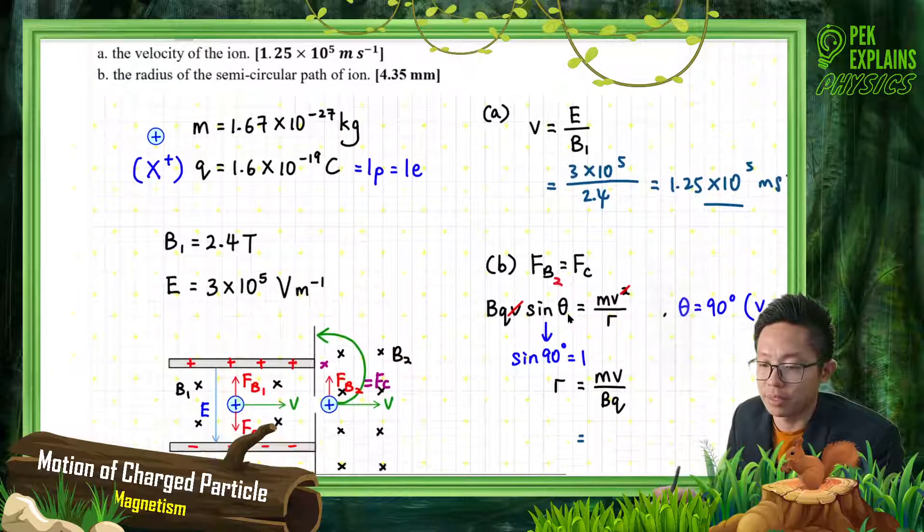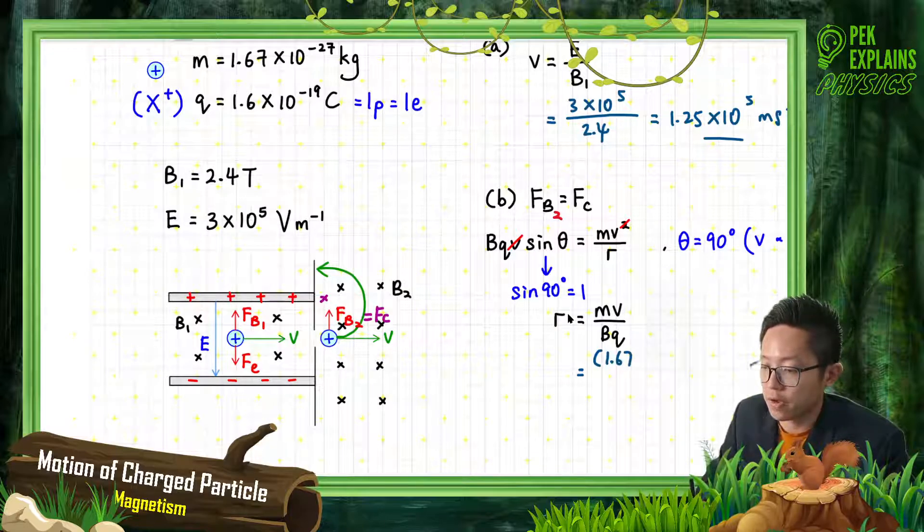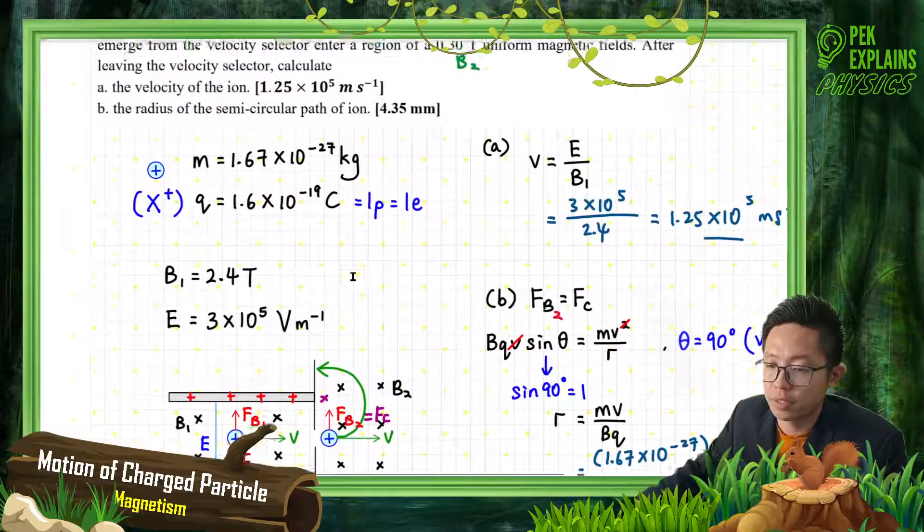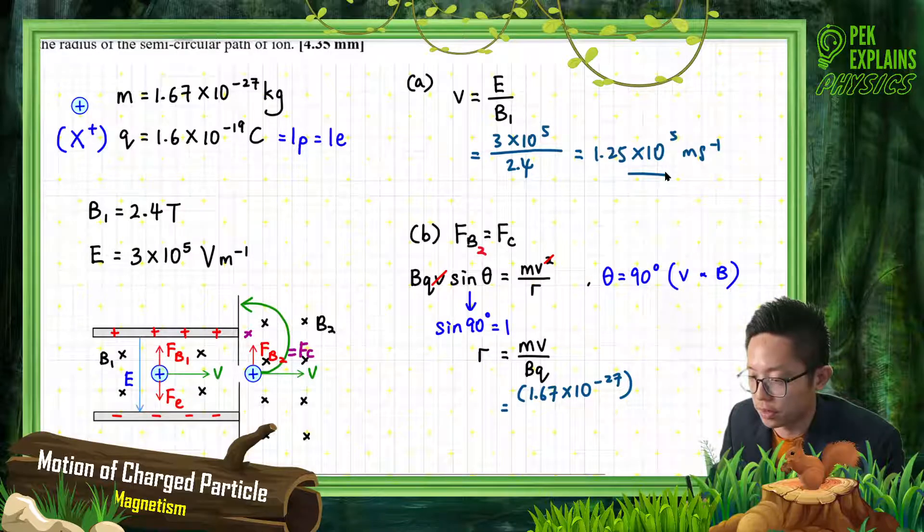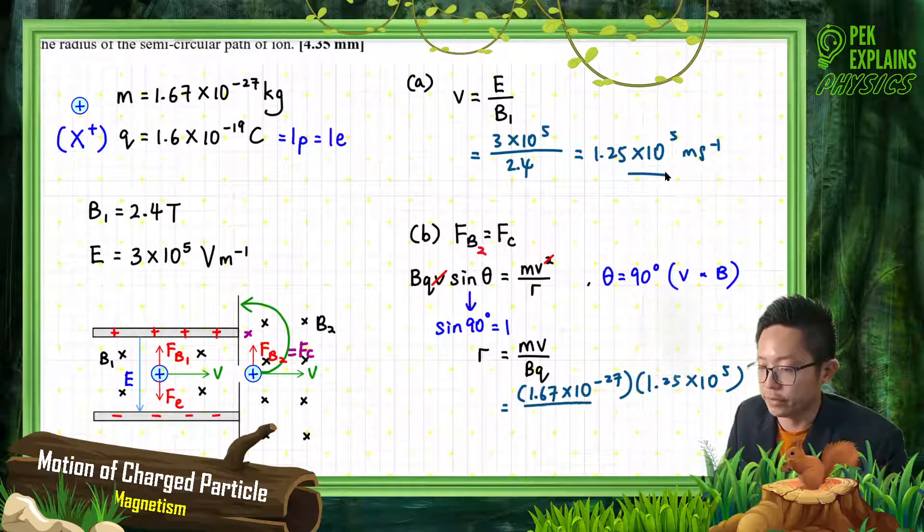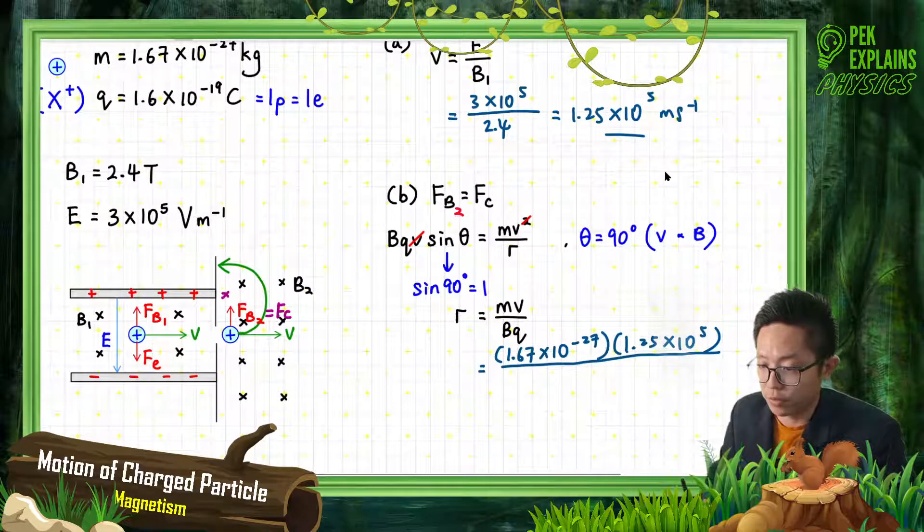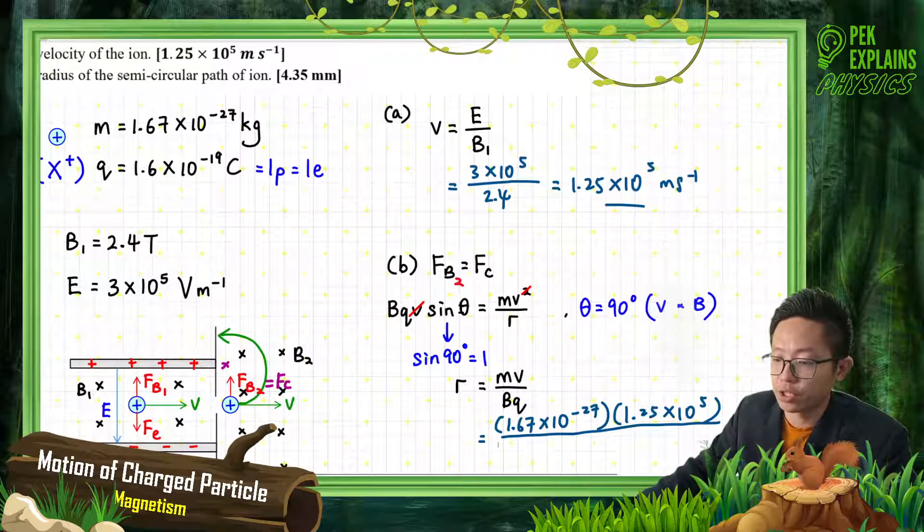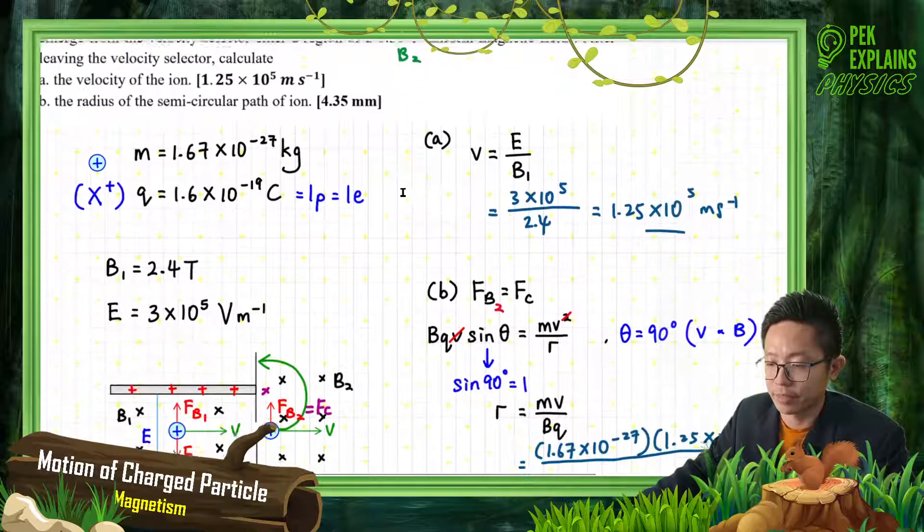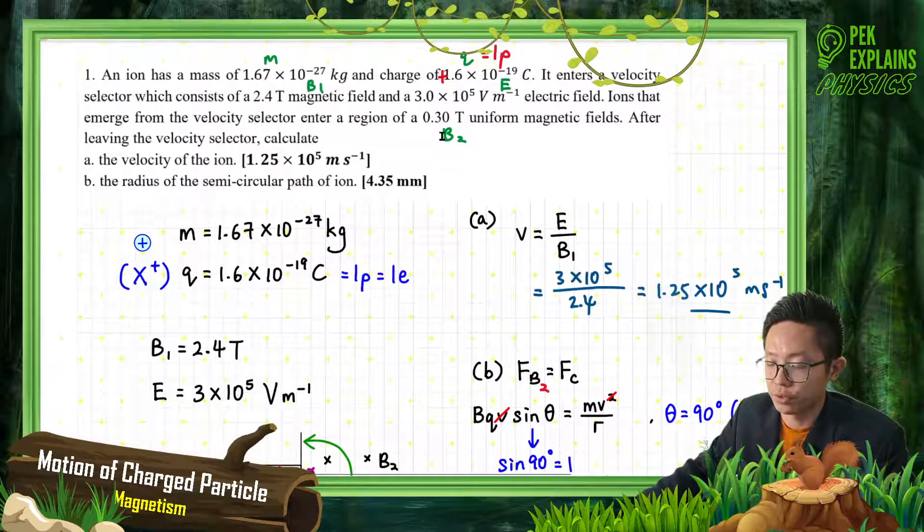Mass is 1.67×10^-27. Velocity is the selected velocity, 1.25×10^5. What's the magnetic field? Don't use the 2.4, now you enter a new region with B2. What's the magnetic field B2? 0.3 Tesla. Not the 2.4, now it's only 0.3.